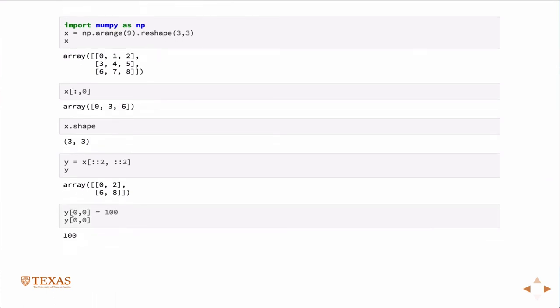And then I can, for example, reassign the first entry, the zero, zero entry of the Y array to 100. And then I just output it there, and you see that.